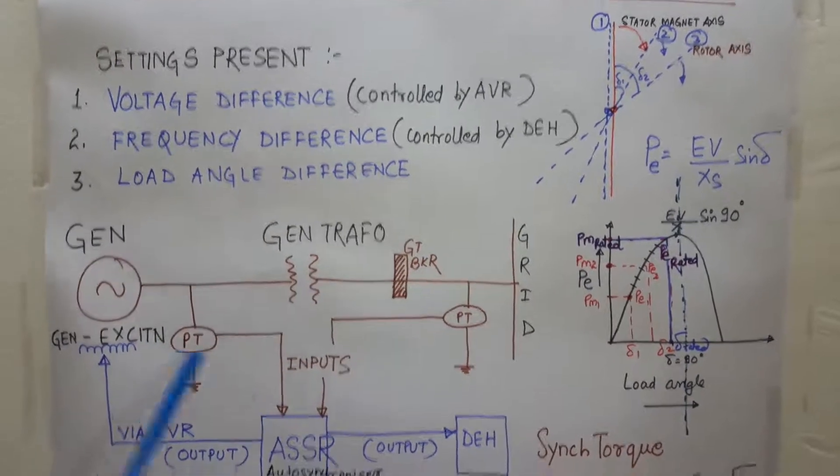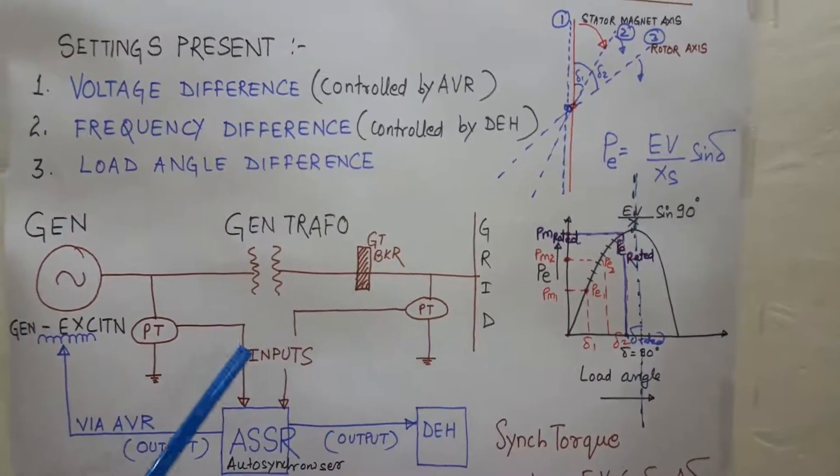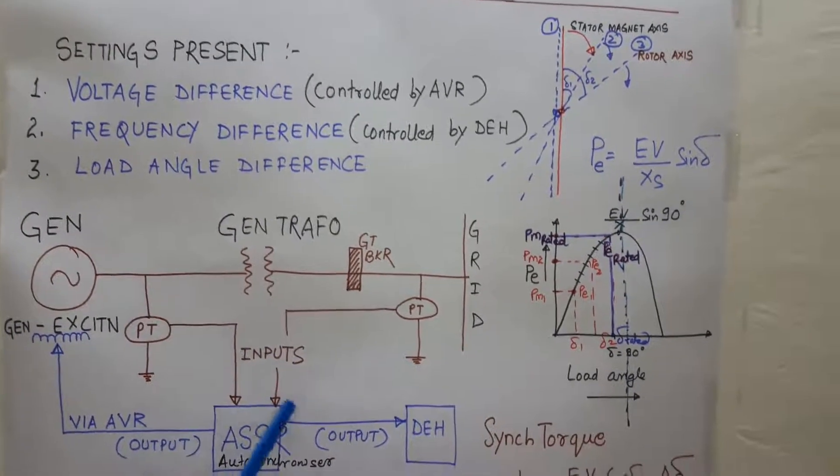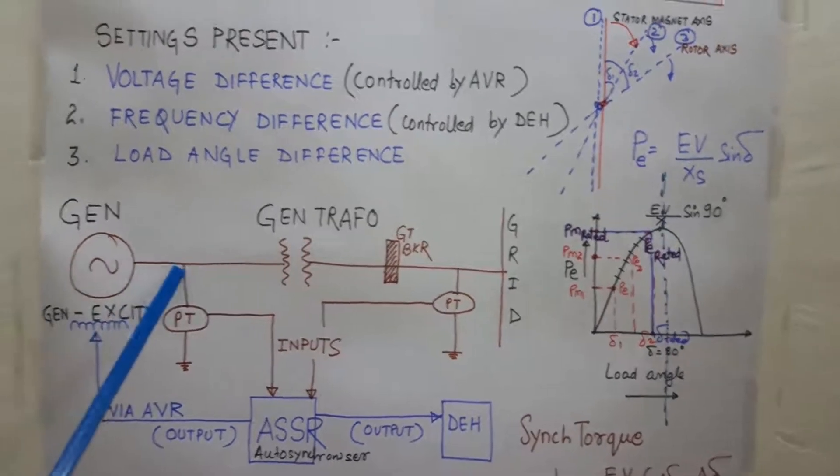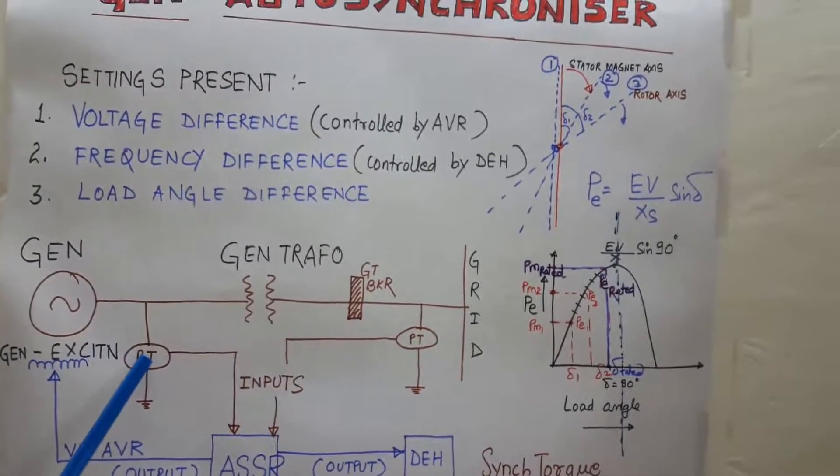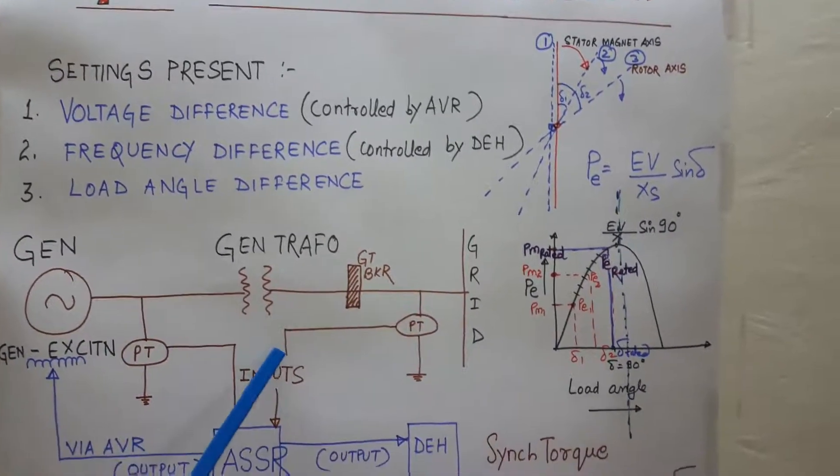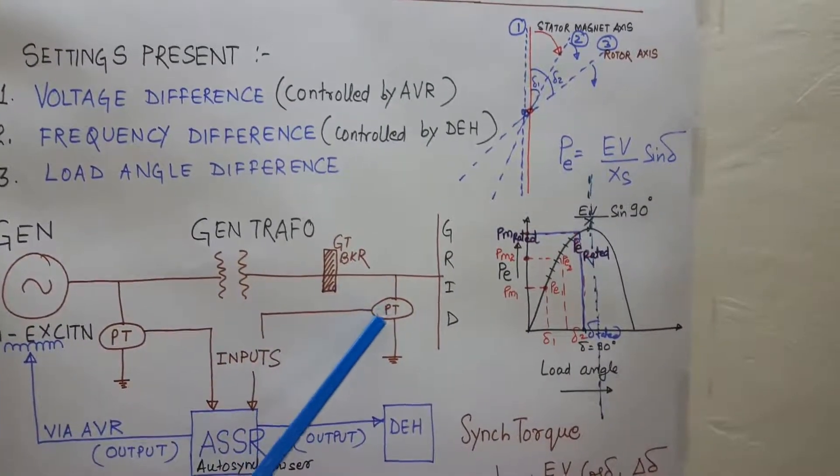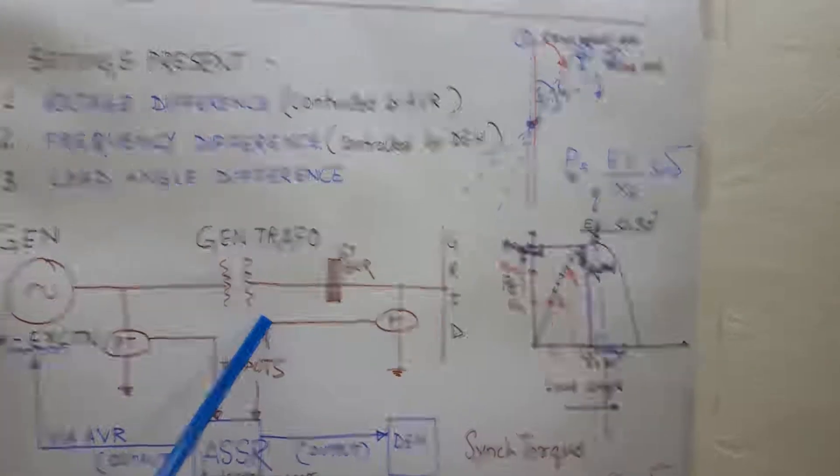These are the two potential transformers which are giving inputs to the device called auto synchronizer. One input is coming from the generator PT for measuring the generator terminal voltage. Another input is coming from the switchyard bus PT for measuring the voltage of the grid or infinite bus.